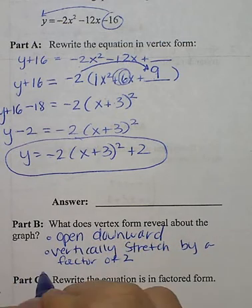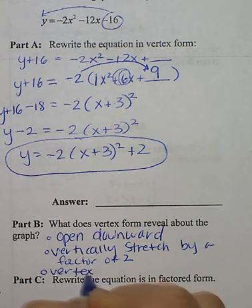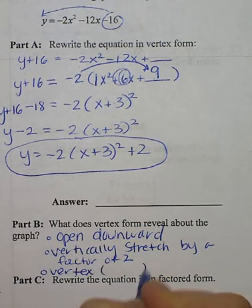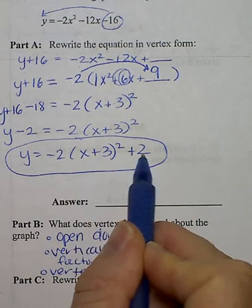And the last thing is vertex form shows the vertex. So the vertex for this problem is negative 3, positive 2.